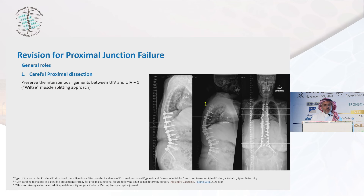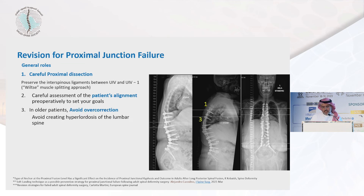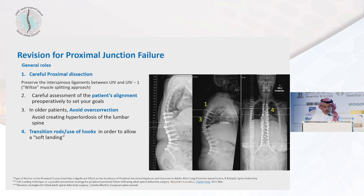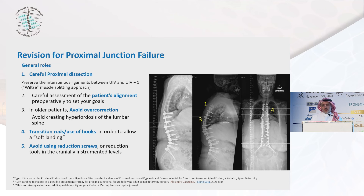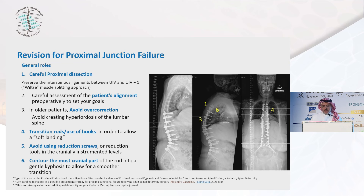Our revision strategy based on the literature: careful dissection proximally, preserve the interspinous ligament, and use a Wiltse-type approach between the muscles. Careful assessment of patient alignment — do not overcorrect the thoracic level. This is very important and recently published extensively: we should not overcorrect the thoracic level, nor hyperlordose the lumbar spine. Use a transition rod or hook for a soft landing. Avoid reduction screws or tools proximally. The most proximal three screws — the rod should land on them without any reduction tools. Contour the most cranial part in a caudal way to allow a smoother transition.